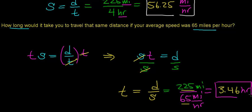And that's your answer. By traveling at 65 miles per hour instead of 56.25 miles per hour, you save about 15 minutes of travel time.